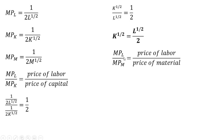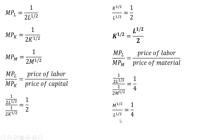Next, we calculate the marginal rate of technical substitution of labor for materials. Plugging in the marginal product of labor divided by the marginal product of materials on the left-hand side, we set that equal to the price of labor (1) divided by the price of materials (4). The twos cancel as before; multiplying through by M to the one-half power and cross-multiplying, we get M to the one-half equals L to the one-half divided by four.